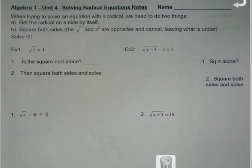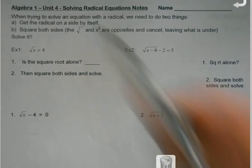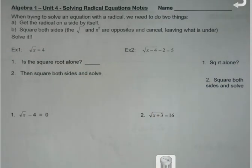I need to get the radical on a side by itself if I can. Then I need to square both sides, and since the square root, my radical, and the square are opposites and cancel, just what's underneath is going to be left over then. So here's how this works.